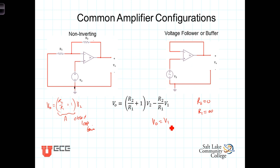That may not sound particularly interesting — the output is just what the input was. Why would we do such a thing? This buffer or voltage follower is useful in a couple of different situations. It's particularly useful when the source we're wanting to amplify has a particularly high equivalent output resistance, such that drawing any current from the source would cause a significant drop in the voltage. The input to the terminal sees an infinite resistance.